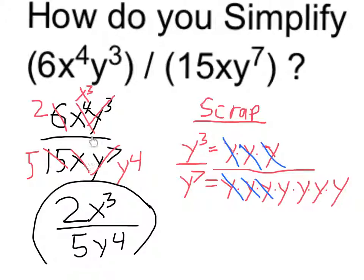Then I look at each variable individually. For the x's, the 1x in the denominator canceled out 1 in the numerator, leaving me with 3. And for the y's, the 3 in the numerator canceled out 3 of the ones in the denominator, leaving me with 4 in the denominator. Hope that helps. Thank you.